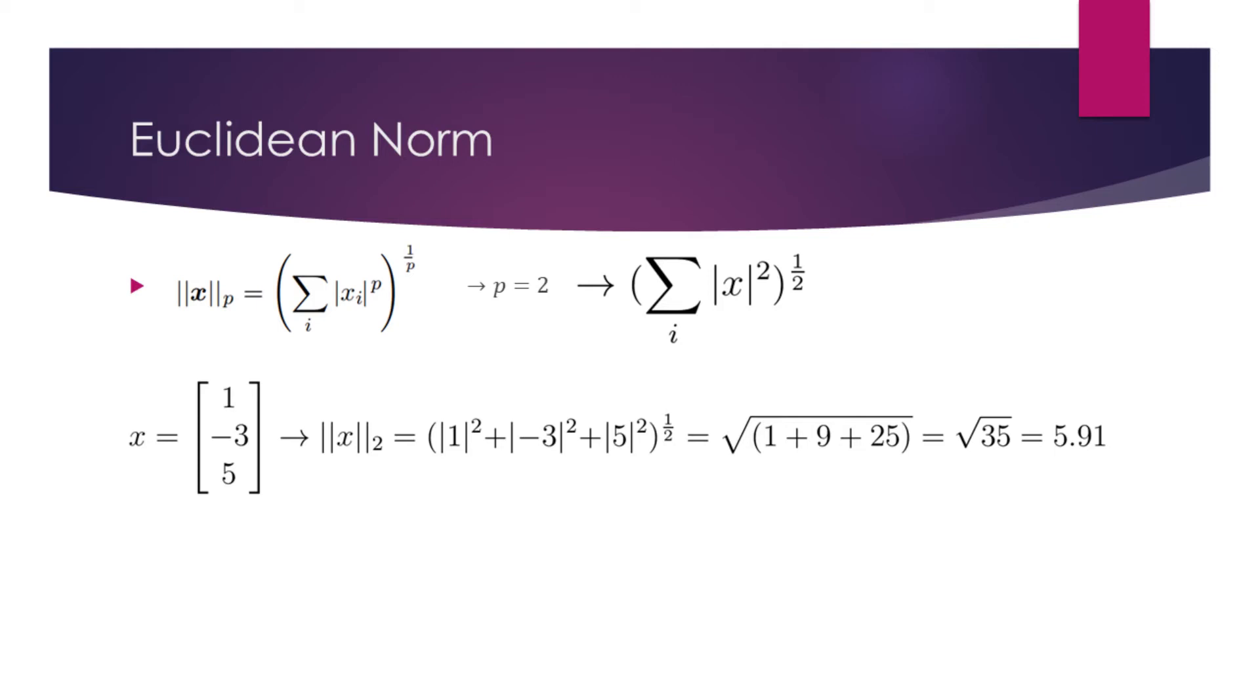Let's find the Euclidean norm of the vector x. First, we sum the squared values of all elements. Then, we take the square root of the result. In the end, we will find that the Euclidean norm of the vector x is approximately 5.9.